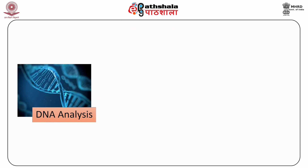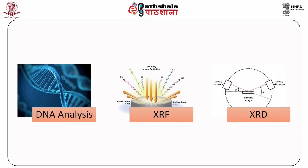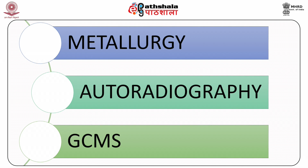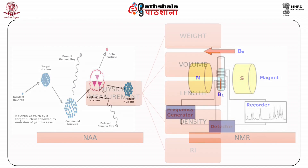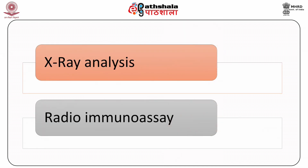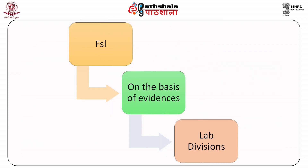Blood group testing techniques include absorption inhibition, absorption elution and mixed agglutination, enzyme typing with single and multi-system electrophoresis, electrophoresis, DNA analysis, XRF, XRD, metallurgy, autoradiography, GC mass spectrometry, nuclear magnetic resonance, nuclear activation analysis, physical measurements such as weight, volume, length, density, refractive index, X-ray analysis and radio immunoassay — all are methods used for examination of evidences.